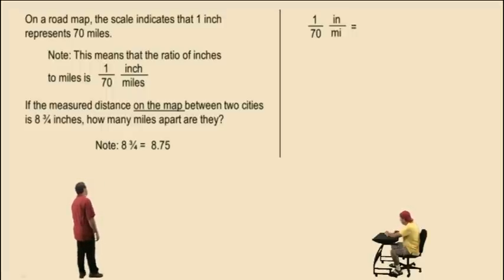So let's set up our proportion problem. On the left hand side, we are going to write our given ratio. And our given ratio is that 1 inch represents 70 miles. Now the unknown quantity that we're looking for is miles. Because it asks us how many miles apart are they, the two cities. So this time, notice we have x in the denominator. And we put 8.75 inches in the numerator.